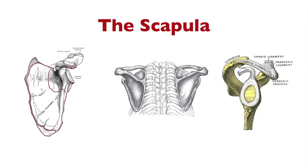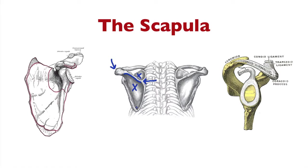Then we spoke about the scapula. On the posterior aspect you have the spine of the scapula, the acromion or acromion process, the base of the spine of the scapula, the supraspinous fossa, the infraspinous fossa, the subscapular fossa, and the glenoid fossa.